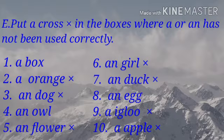Number 9, an igloo — incorrect, so children, you have to give a cross mark on your book. Number 10, an apple — incorrect, so you have to give a cross mark on your book.